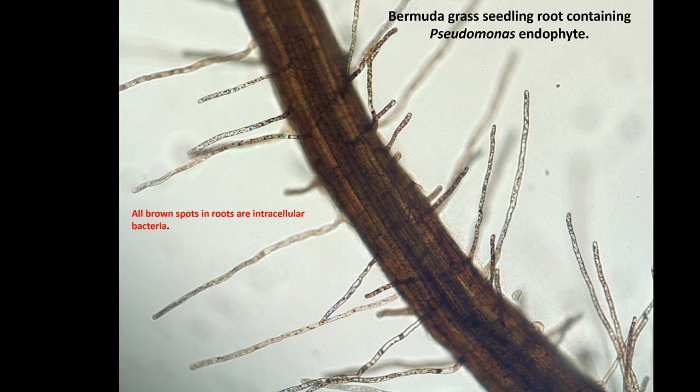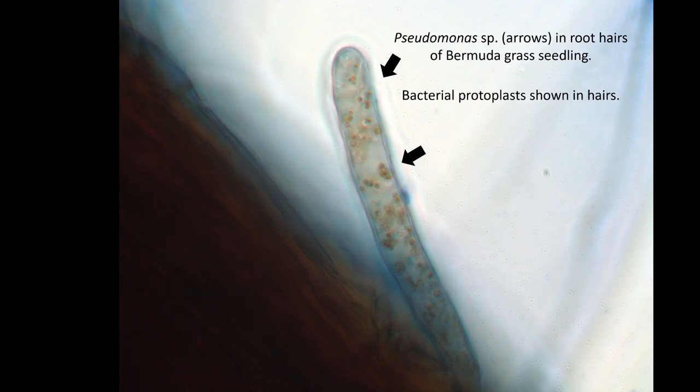This shows a bermuda grass root again — you can see the root hairs and inside those hairs, all those little brown dots are the bacteria. These roots are loaded with bacteria internally. This shows a root hair from one of those plants, and you can see the little spherical structures — those are the protoplasts inside that root hair.